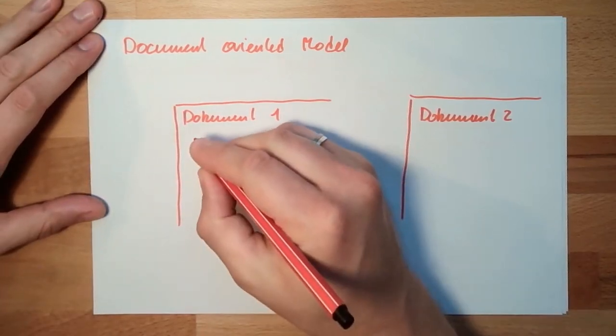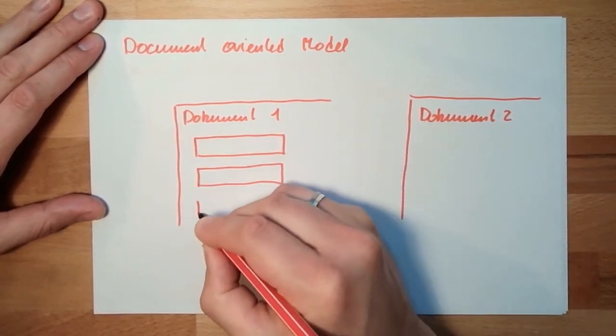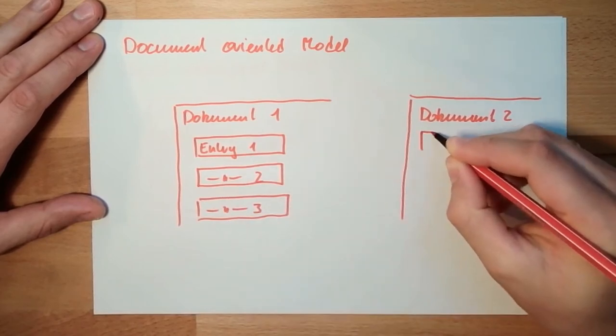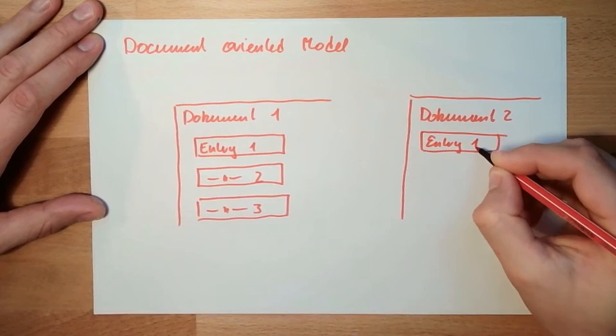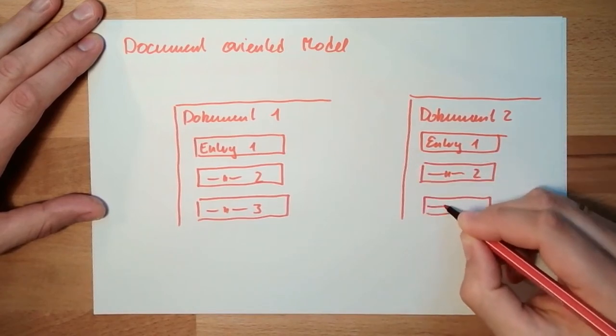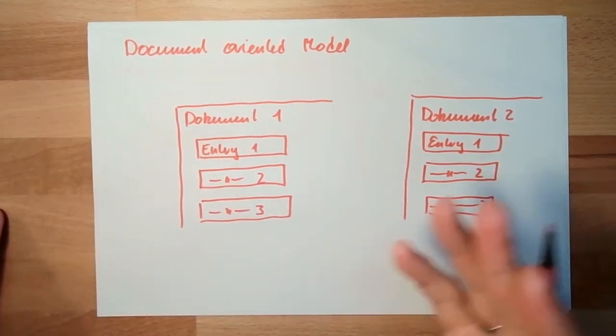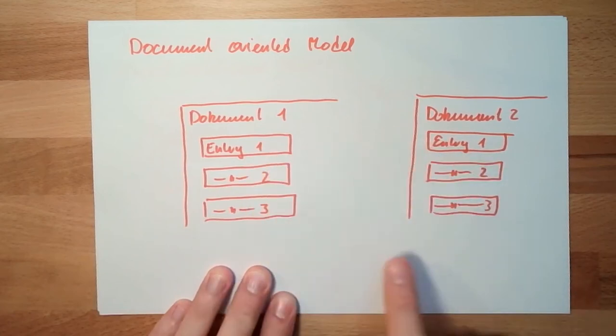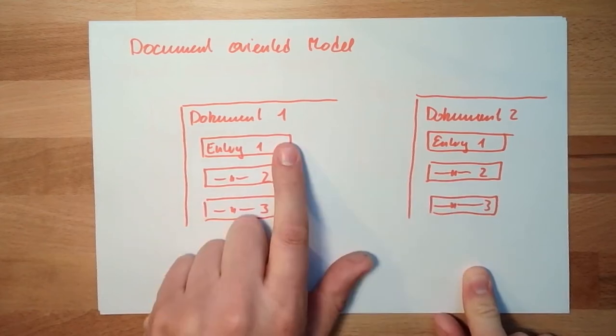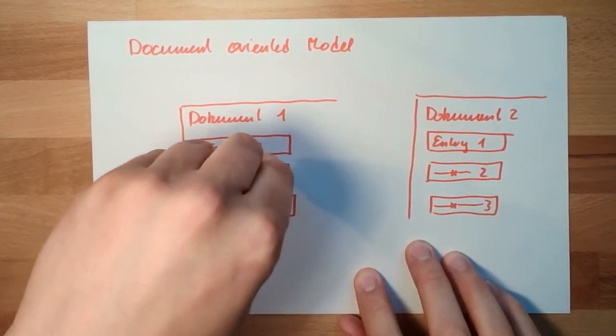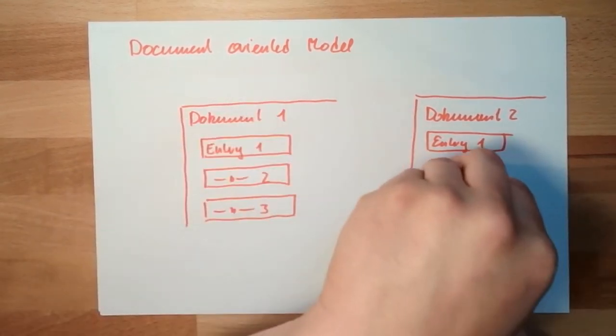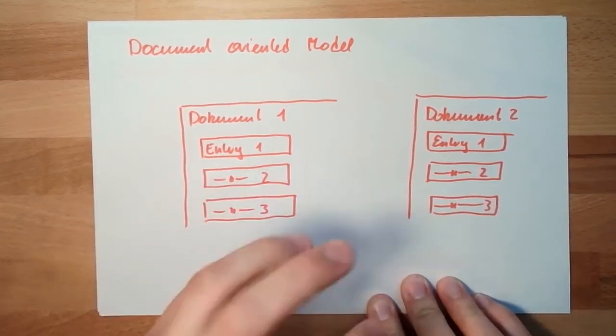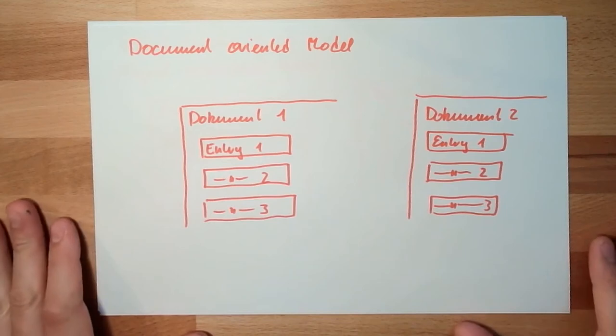However, each document probably has some entries. Entry one, entry two, entry three. And here we also have entries. It's like a Word file, like a document. What is not possible in this document-oriented thing is the relations between the documents. So if I change this entry one in document one, this entry two, even if it should be the same, will stay the same. This makes it very difficult to find consistency.